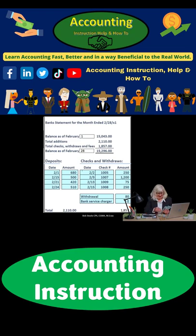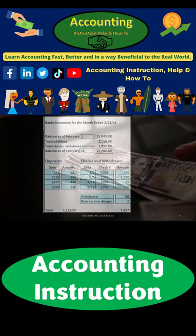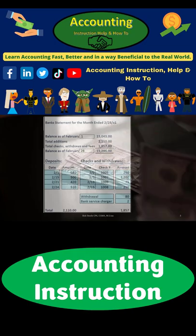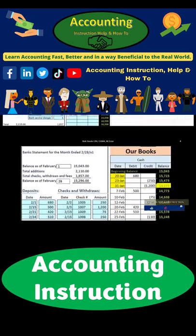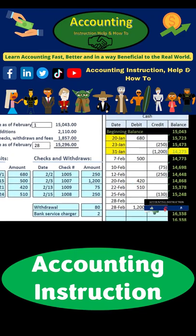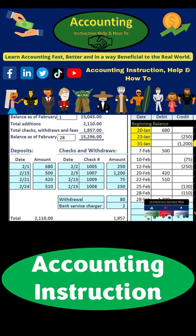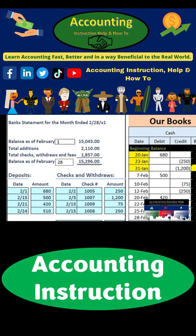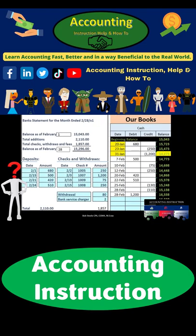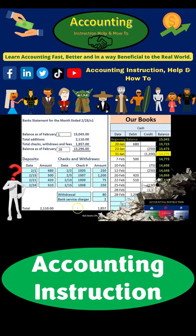The checks that have not yet been cleared are going to be those outstanding checks. When we compare the bank statement to our books such as the general ledger, we're looking for those outstanding checks — the ones that aren't cancelled, the ones that have not cleared — which is usually the difference that we will then reconcile in the bank reconciliation.